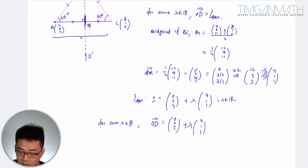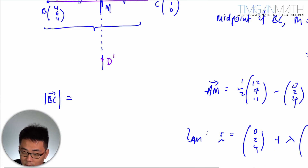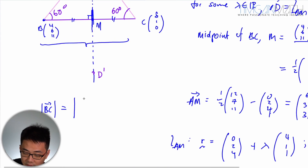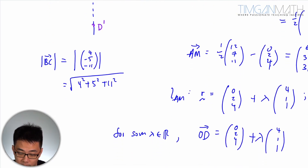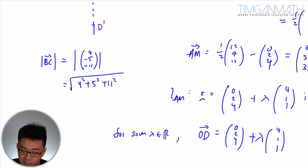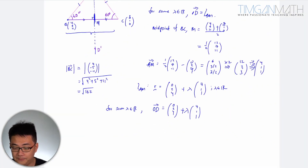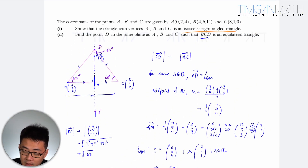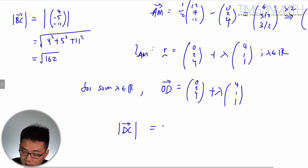Next I find the length of BC. Since I didn't do the first part, I'll just work it out: the length of BC is √(4² + 5² + ...). So mod BC gives me a value I'll use to set up the constraint that mod DC equals mod BC.